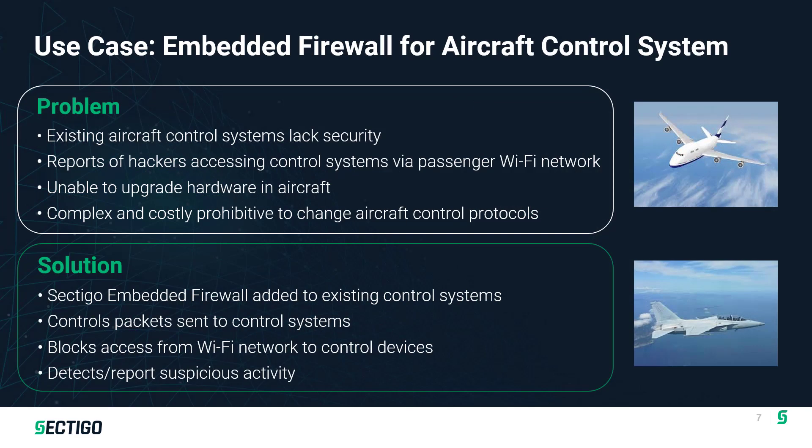Another similar use case is in the aerospace industry. A number of years ago, a well-known hacker tweeted about being able to hack from the infotainment Wi-Fi system on an airplane while in flight, and actually issued climb commands to change the altitude of the aircraft. By virtue of tweeting about it, he ended up spending some quality time with the FBI. I was never able to find any published reports either denying or confirming that he had successfully launched that attack. However, since that time, we've worked with folks in the aircraft industry to build our firewall into some of these control systems to control and block access from the Wi-Fi network into the control network on those aircraft.